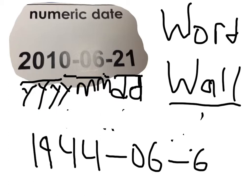So for our year, 1944, our month is 06 for the sixth month, which was June. And then the sixth day in June. That in regular date would be 1944, June 6th. But now that we're doing numeric date, that's how it's written down. So that is our example.